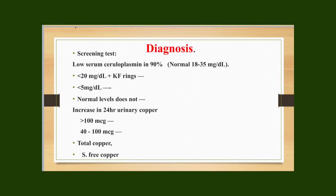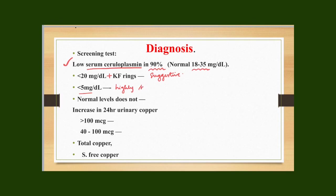Let's discuss the diagnosis of Wilson's disease. The first test is serum ceruloplasmin, which is low in about 90% of patients. Normal values are 18 to 35 mg/dL. In Wilson's disease, a value less than 20 mg/dL along with the presence of KF rings is suggestive of the disease. If serum ceruloplasmin is less than 5 mg/dL, it is highly suggestive of Wilson's disease.